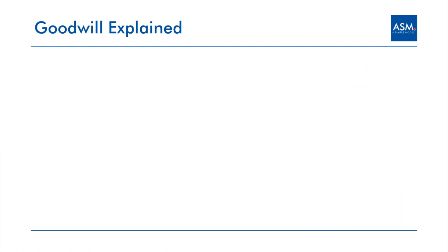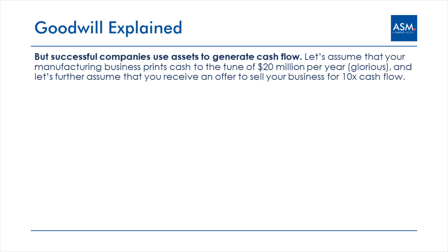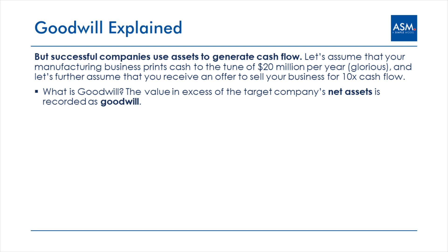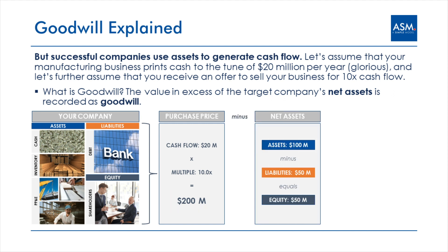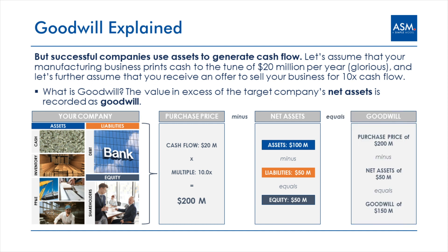But why would you liquidate a company if it's generating a bunch of cash? Let's assume your manufacturing business prints cash to the tune of $20 million per year, and you receive an offer to sell your business for 10 times cash flow. We're looking for the value in excess of the target company's net assets. Your company is selling for a 10 times multiple of $20 million in cash flow, for a purchase price of $200 million. If you subtract net assets of $50 million, the business acquiring your company will record goodwill in the amount of $150 million on its balance sheet. Another way to think about this is that you just sold your business for four times book value, which means your business must be doing something pretty clever.